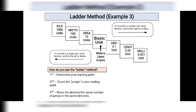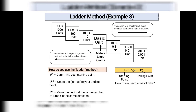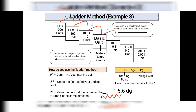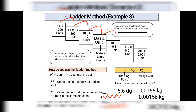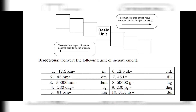Let's have our third example: convert 15.6 decigram to kilogram. The starting point is decigram and the ending point is kilogram. Count from decigram: one, two, three, four — so we move four units going to the left. Moving the decimal point four places left, we are lacking digits for two decimal places so we put two zeros. Therefore, 15.6 decigram is equal to 0.00156 kilogram.